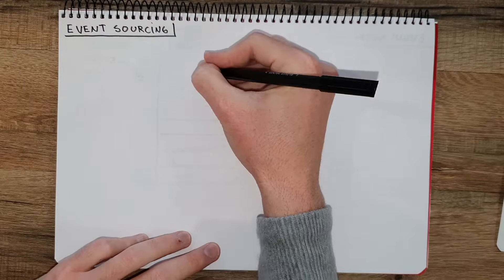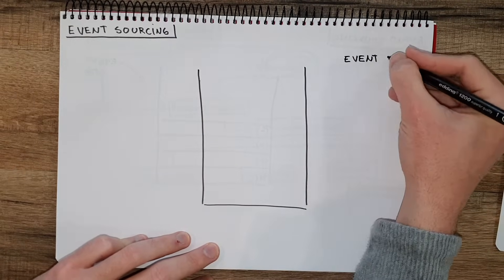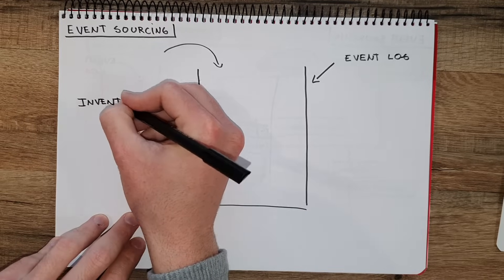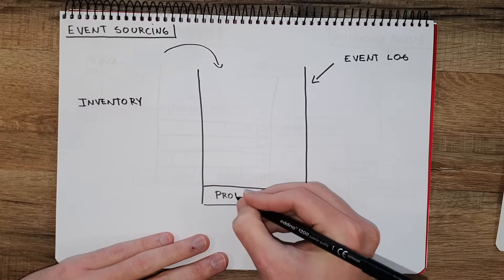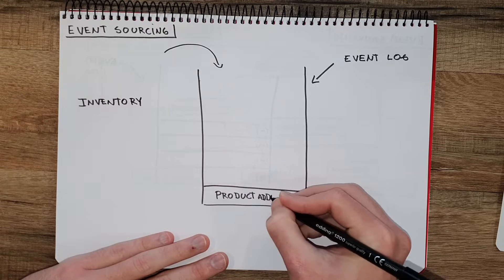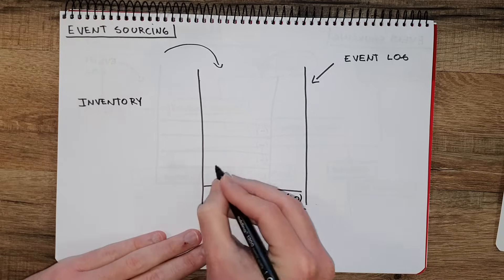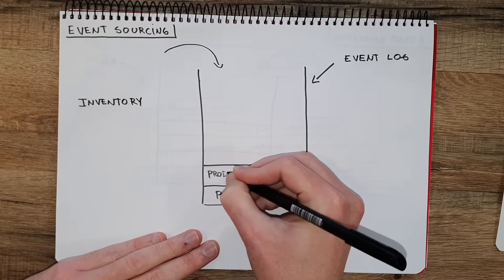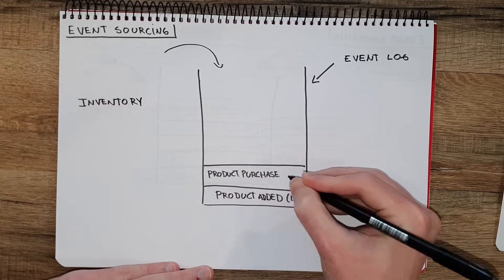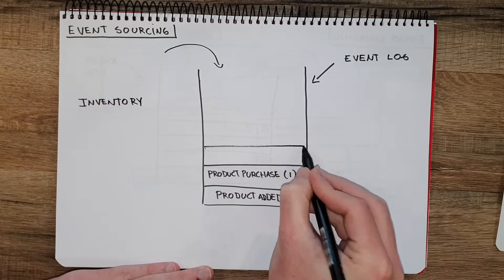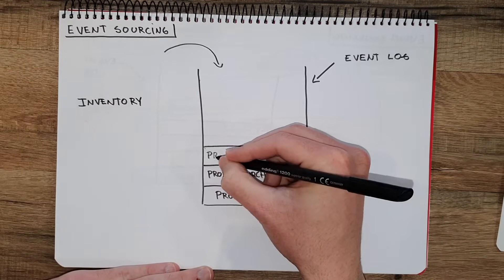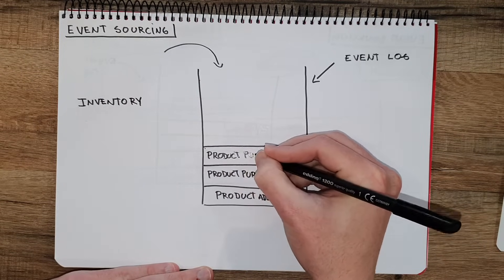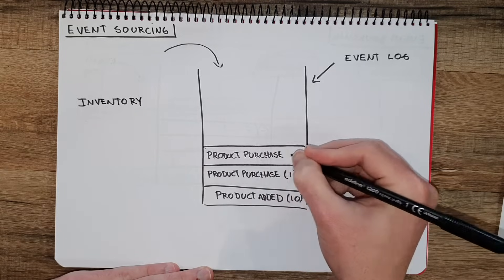Let's go to the example of an e-commerce site that we have seen in previous videos. Let's say we want to keep track of inventory — what is the current inventory. We have an event called Product Added that has a product ID and the amount of that product added into the inventory. And when someone buys a product, there is an event called Product Purchase with a product ID and the amount purchased. Let's say we read the event log and we have first the Product Added event with 10 products, and later some users buy these products — maybe one purchase and then another.